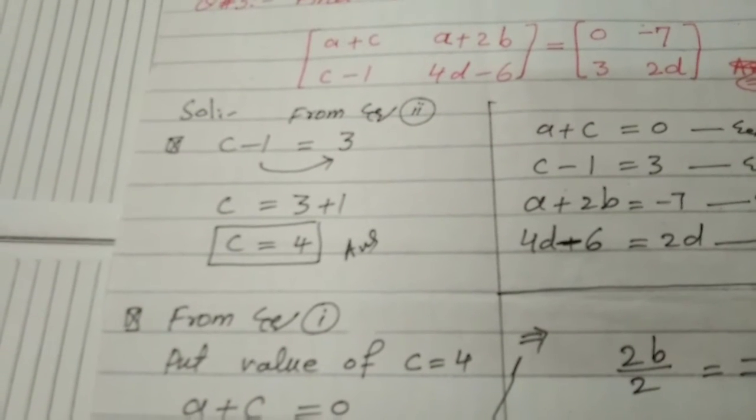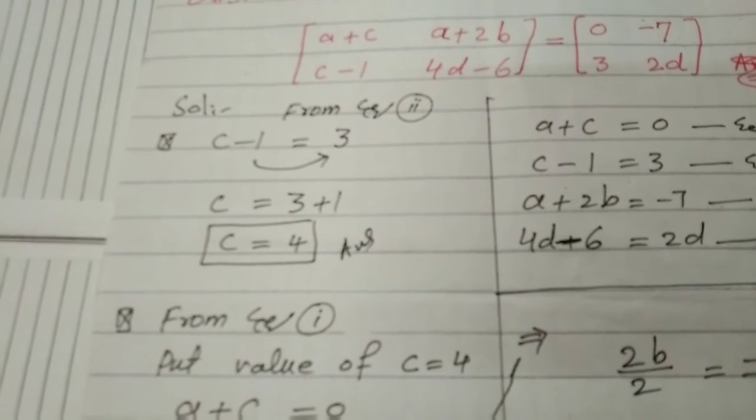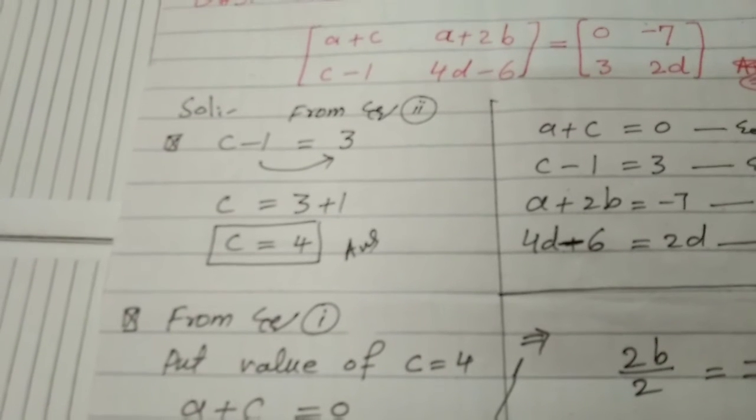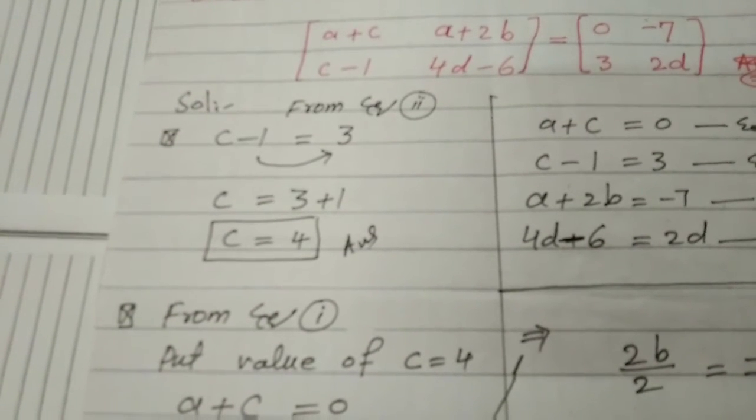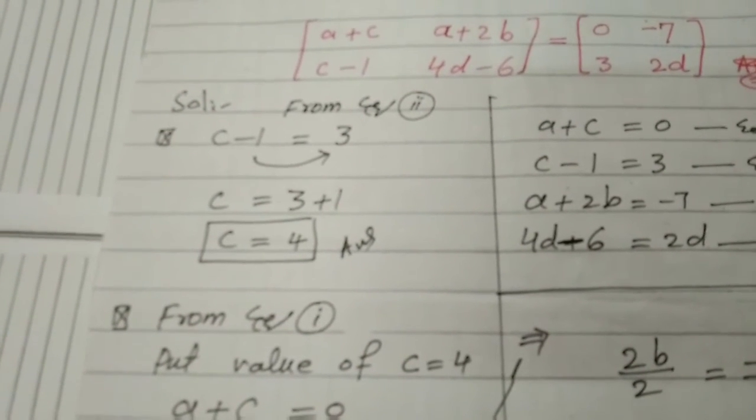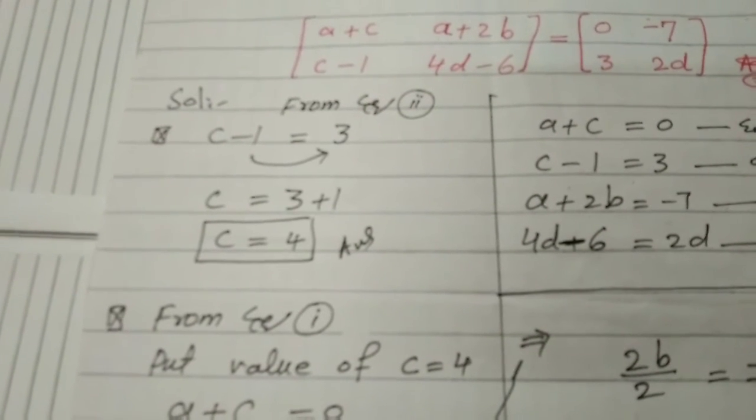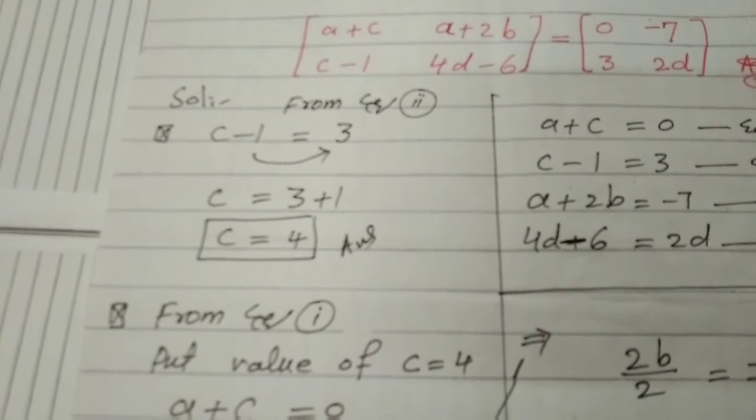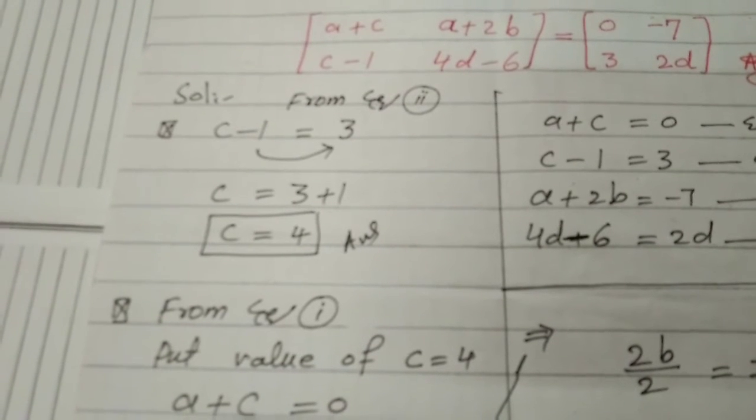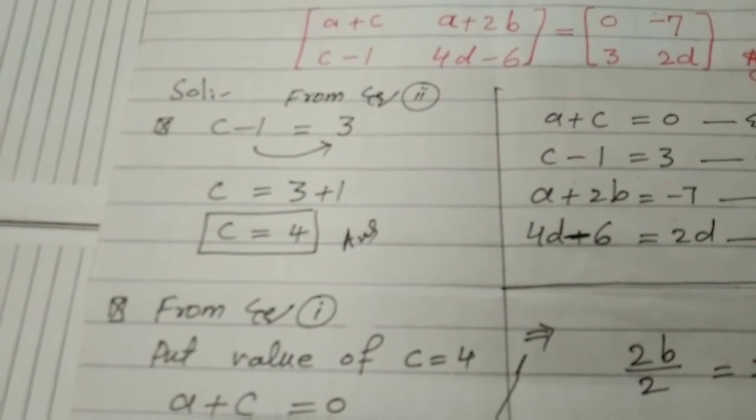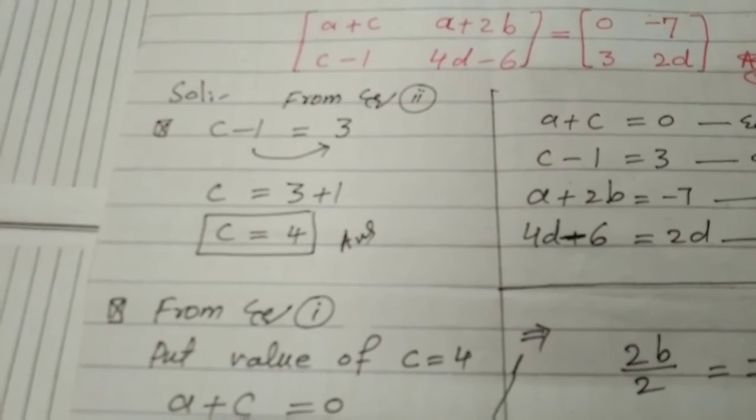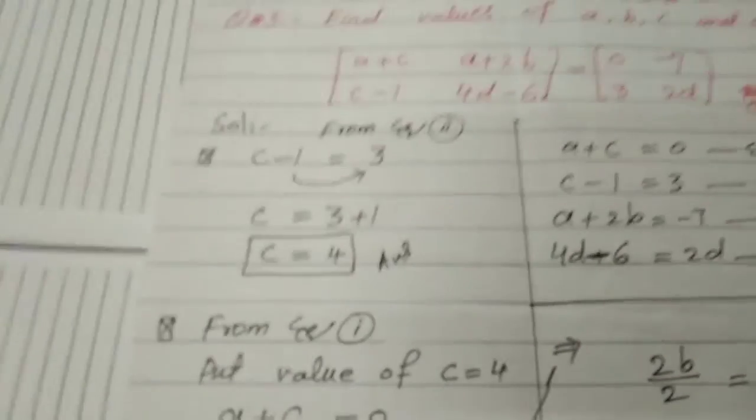Now move toward the first. From question two, c minus 1 equal to 3, we will take minus 1 towards 3. It will be positive because minus 1 on left side is minus 1, so it will be converted to plus. So 3 plus 1 is equal to 4.